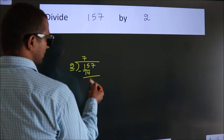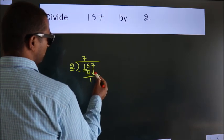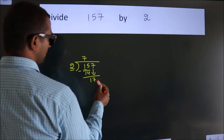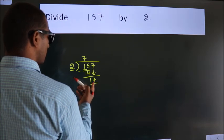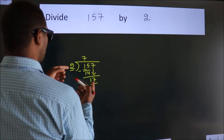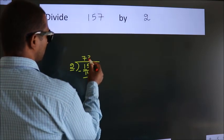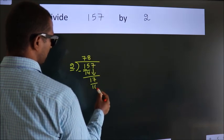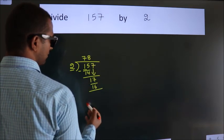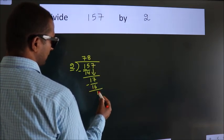After this, bring down the beside number. So, 7 down. So, 17. A number close to 17 in 2 table is 2 times 8, which is 16. Now we subtract. We get 1.